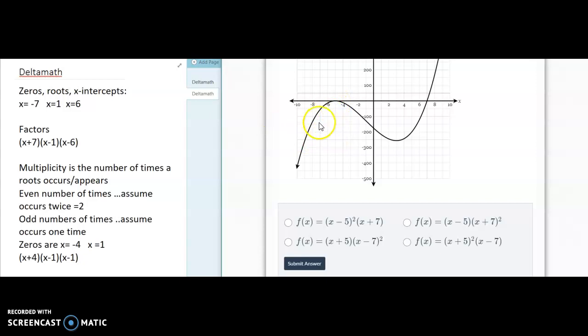Notice that at negative 5, it comes up and touches it. That means it's an even multiplicity. And for our purposes, we're assuming that it occurs twice. And then here, it's one multiplicity because it goes through. Technically it's odd.